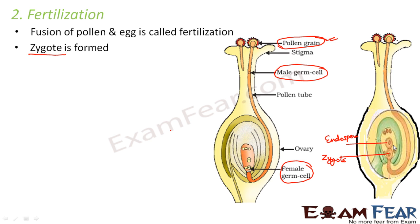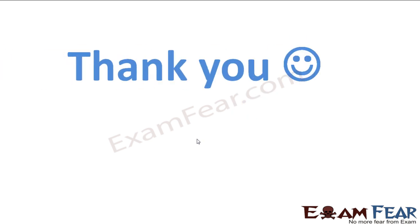To summarize: the first step was pollination, where the pollen grain reaches the female reproductive part — specifically the stigma. The second step is fertilization, where the male germ cell inside the pollen grain travels to the ovary and fuses with the egg cell to form the zygote. Thank you.